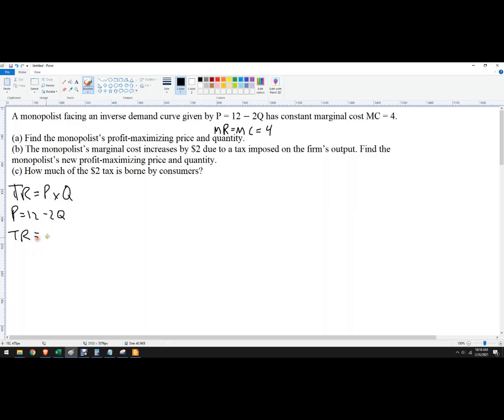So we need to multiply quantity all the way through this equation and that gives us total revenue. So total revenue is Q times (12 - 2Q), which equals 12Q - 2Q². So then the partial derivative with respect to Q is going to be 12 - 4Q.